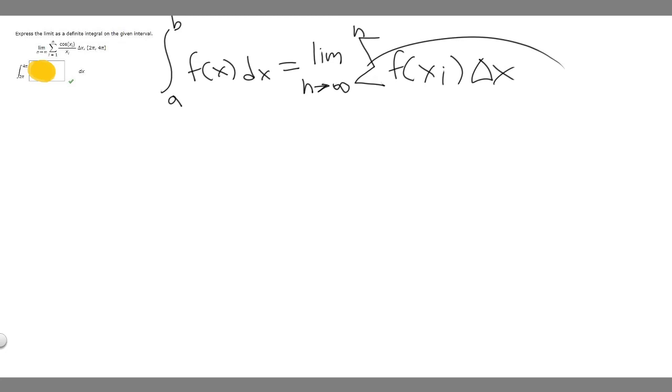this is the same as this here. This is going to be our function, so f(x_i) equals cosine of x_i over x_i. It's just this function with x sub i replacing x.